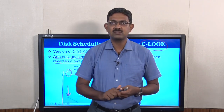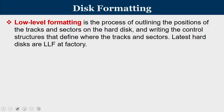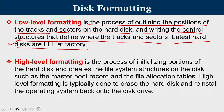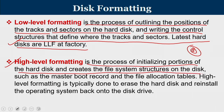Summary of scheduling algorithms: FCFS has a lot of zigzag movements; SSTF chooses shortest seek time first; SCAN is the elevator algorithm; C-SCAN is circular scan; and CLOOK is a modified version. Regarding disk formatting, there are two types: low-level formatting, which outlines the positions of tracks and sectors and writes control structures defining where they start and end (done at the factory); and high-level formatting, which initializes portions of the hard disk and creates file system structures such as the master boot record and file allocation tables — typically done when erasing and reinstalling an operating system.